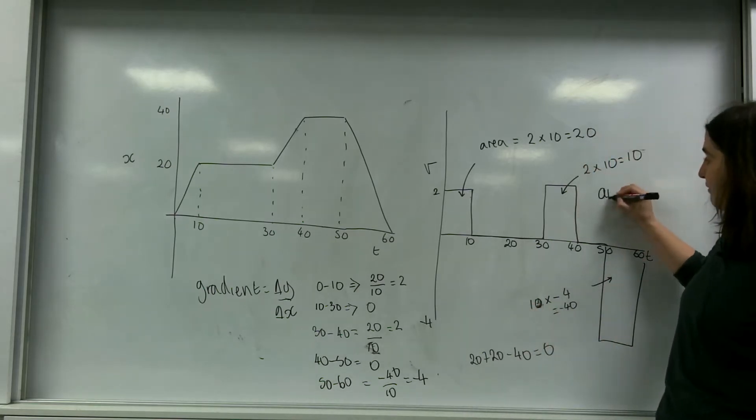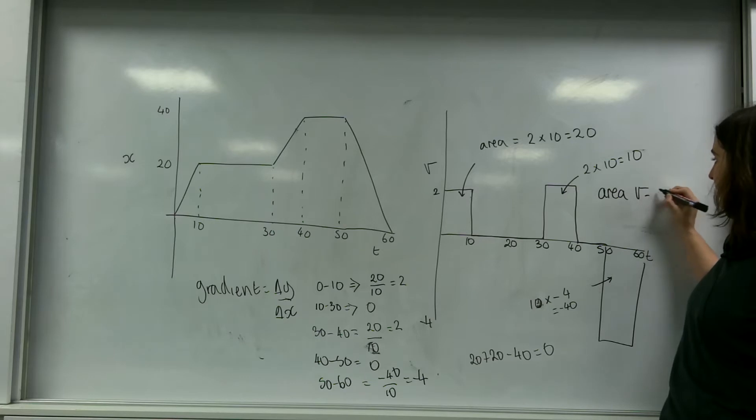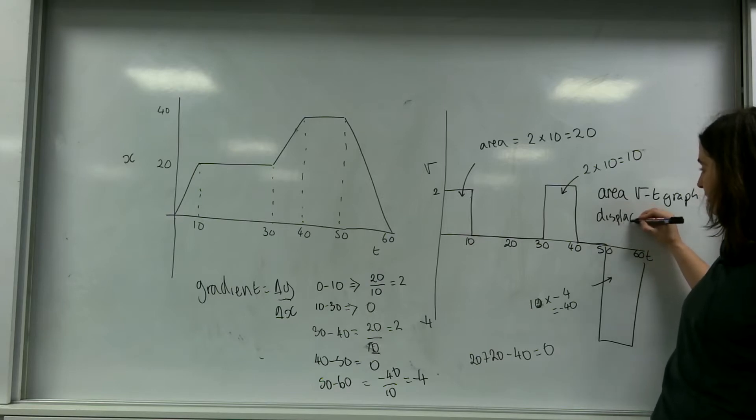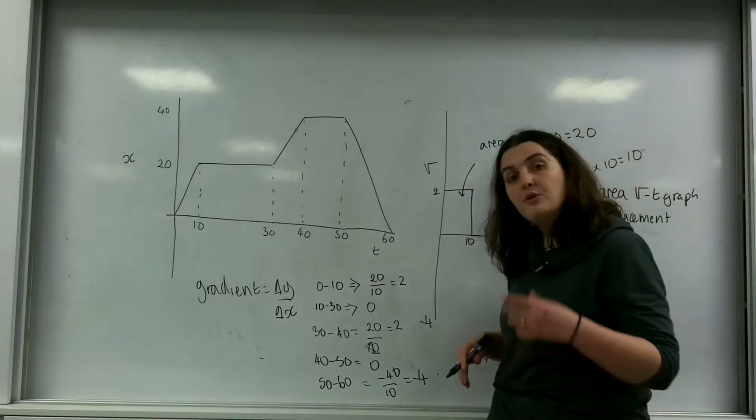So if you take the area of a velocity time graph, you will have the displacement of the object.